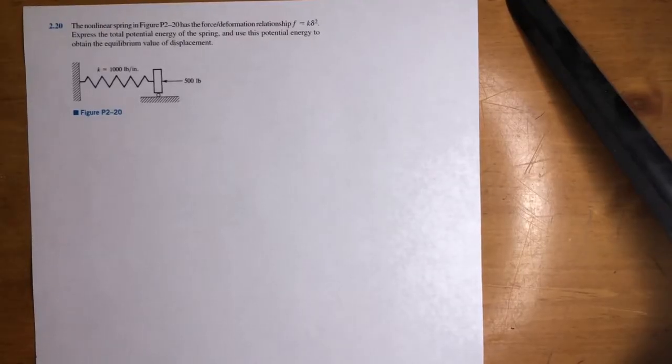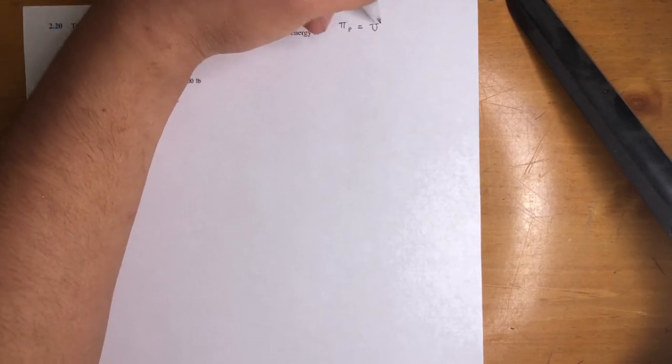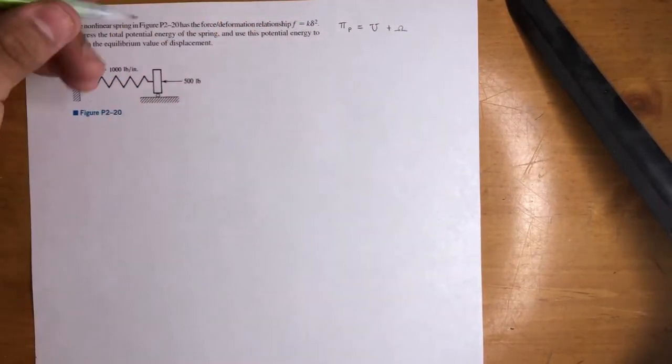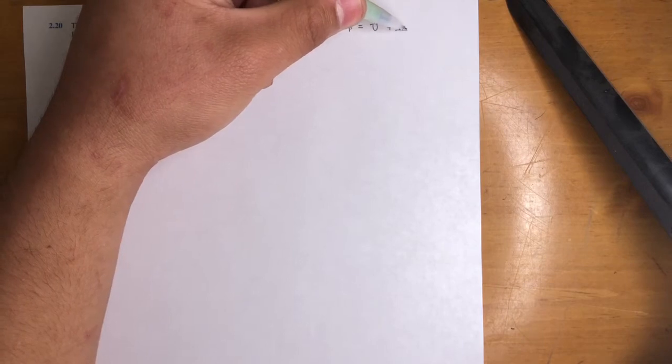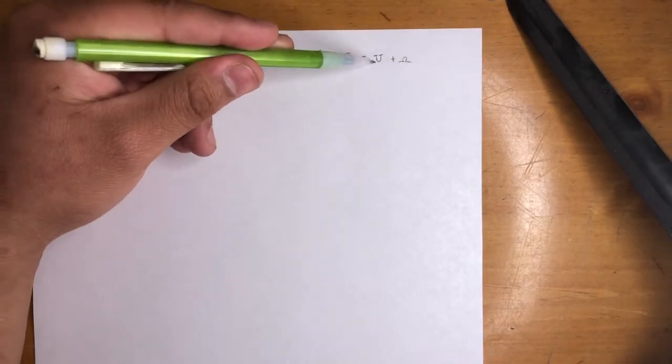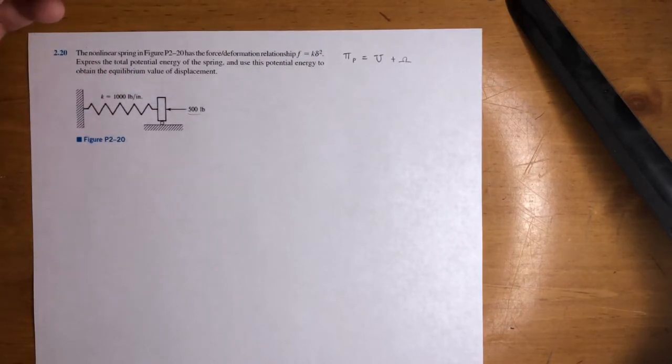Alright, so before we get started, I just wanted to let you know that potential energy doesn't come up too much, maybe for like a week at most. The overall goal of these problems is finding the total potential energy of the spring, which is U plus omega. U is the internal strain energy. Usually you'll use the spring to find U, and then this potential energy omega is due to external forces, so the 500. That's kind of a good way to remember it. U, you got to focus on the spring, and then for omega you got to focus on the load.